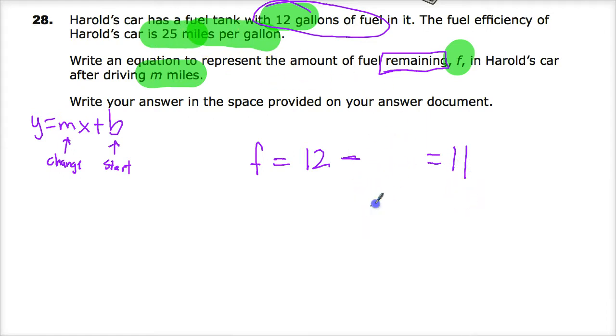Well, if I have 25 miles per gallon and I drove 25 miles, 25 divided by 25 gives me 1. That would give me 11 gallons.